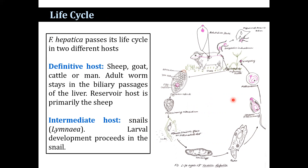Immature eggs pass out with the fecal matter of the definitive host and contaminate water. Within nine to fifteen days at 22 to 25 degrees centigrade, a ciliated miracidium larva comes out from the egg. The miracidium can live in water for only eight hours and must find a suitable intermediate host — Limnaea, Planorbis, or Bulinus.